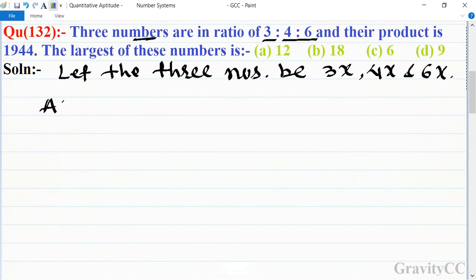And according to the question, their product is equal to 1944. So 3x into 4x into 6x is equal to 1944. Therefore x cubed is equal to 1944 upon 3 into 4 into 6.